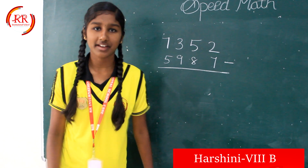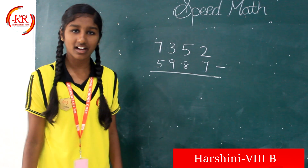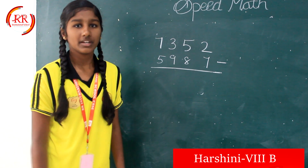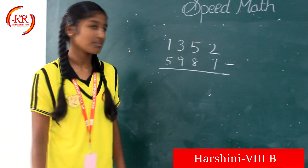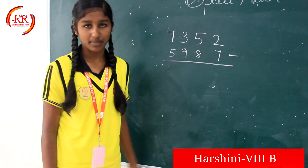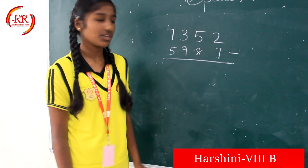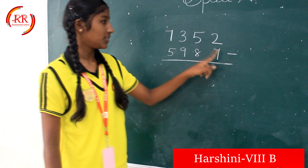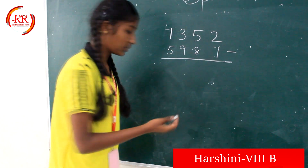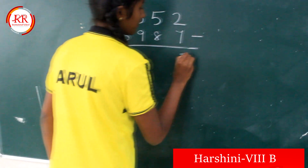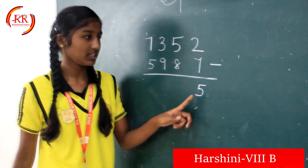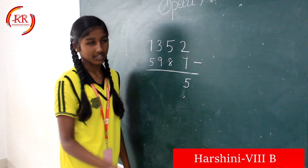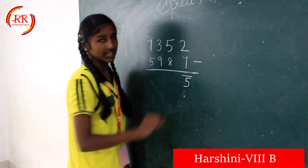Good morning to all. I am Hashmi, studying in 8th grade in R.I. International School. Today I am going to teach you a new math trick in subtraction. Normally we will be borrowing and doing subtraction. But in this method we are going to take reverse subtraction. Now we are going to do 7 minus 2, which is 5. Reverse subtraction will be subtracting 5. If you are taking reverse subtraction, we have to put a bar like this.